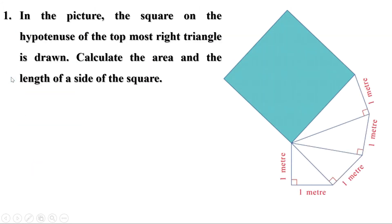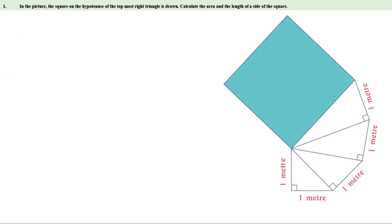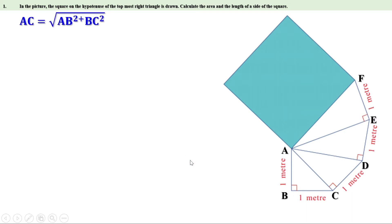In the picture, the square on the hypotenuse of the topmost right triangle is drawn. Calculate the area and the length of a side of the square. We have to find the length of a side of the square and its area. Consider triangle ABC. It is a right angle triangle and AC is its hypotenuse. We know hypotenuse square equals base square plus altitude square. Therefore, AC square equals AB square plus BC square, or AC equals root of AB square plus BC square.